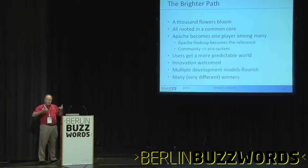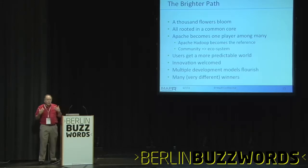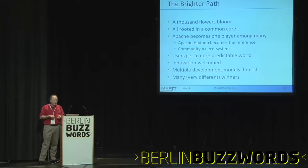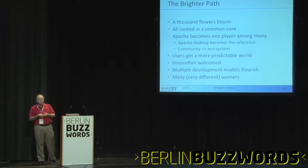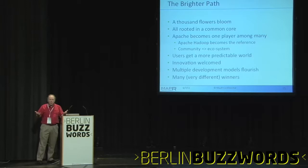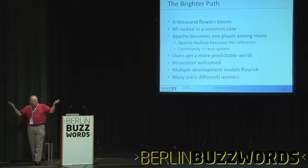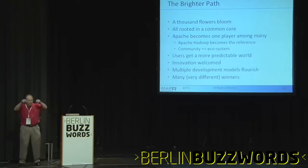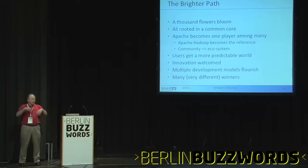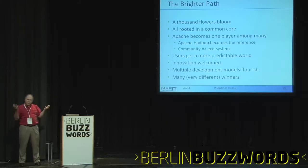People who are using it get a predictable thing. We welcome innovation of many kinds, not just the one kind of Apache innovation. We have many developmental models — people can develop software in many different ways. And we can have many winners. It's like a bike race: they have different jerseys. Not everybody has to cross the line first — some people sprint, some people climb, some people win, some are team members. There are many winners because there are many different ways to win.